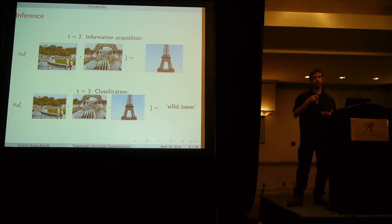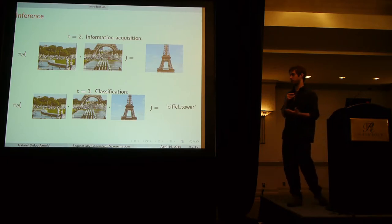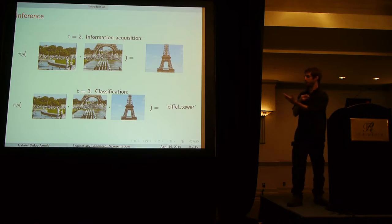We say we have fixed budget three. So now that we have these three regions, the classifier is forced to classify. It uses the information that it's acquired itself and then gets the classification label, Eiffel Tower in this case.